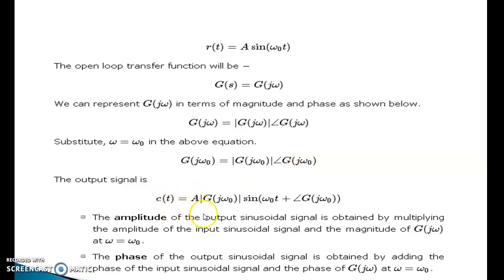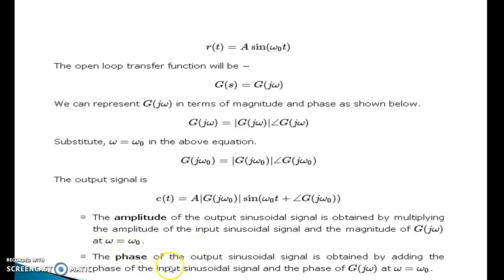Substituting ω = ω₀, the above equation gives G(jω₀) = |G(jω₀)| ∠G(jω₀). The output signal is C(t) = A|G(jω₀)| sin(ω₀t + ∠G(jω₀)). The amplitude of the output sinusoidal signal is obtained by multiplying the amplitude of the input sinusoidal signal and the magnitude of G(jω₀). The phase of the output sinusoidal signal is obtained by adding the phase of the input sinusoidal signal and the phase of G(jω₀) at ω = ω₀.